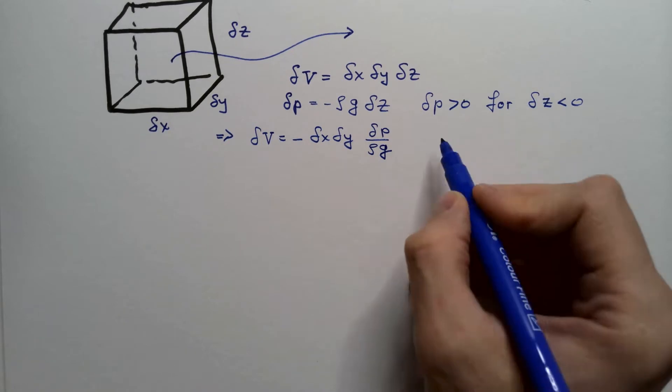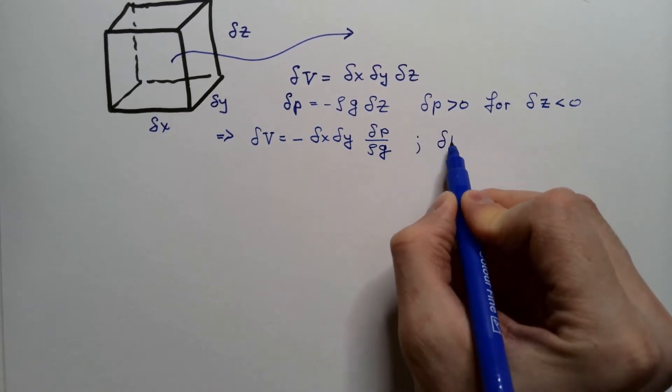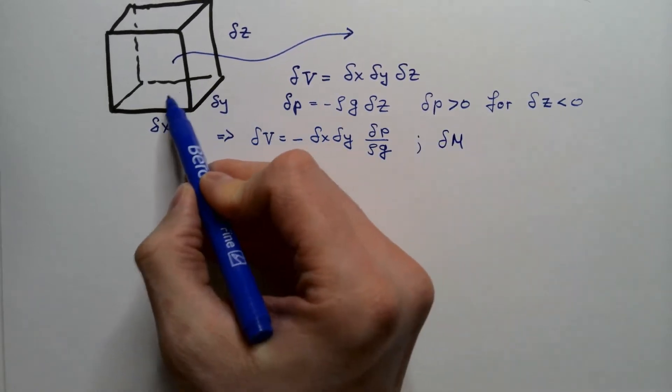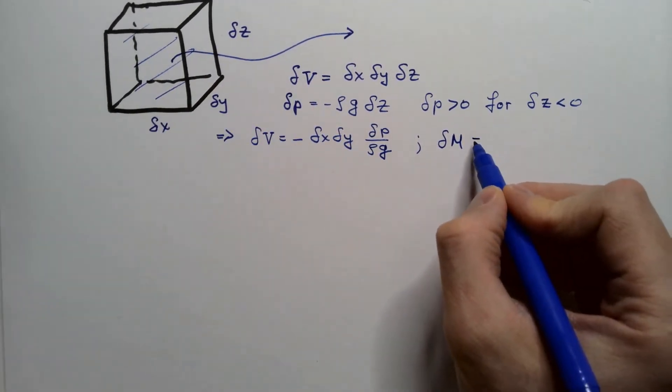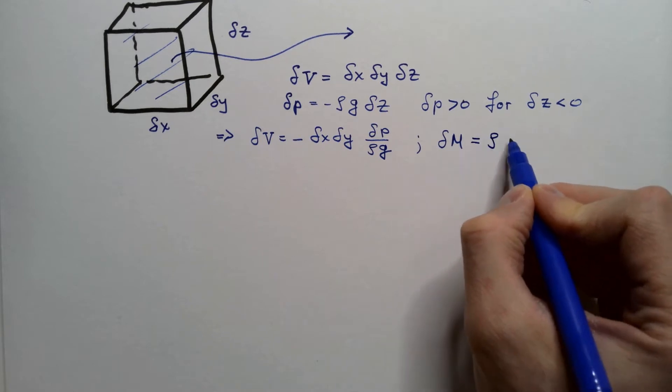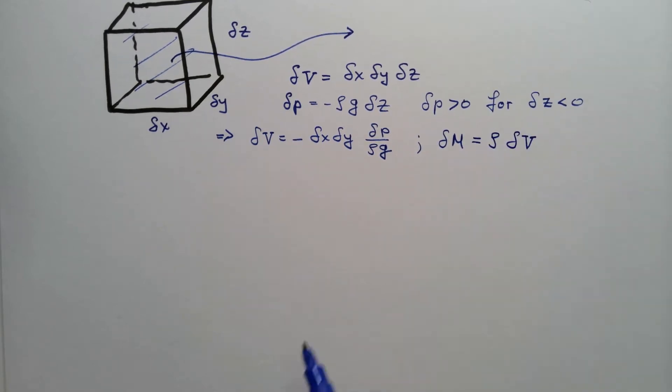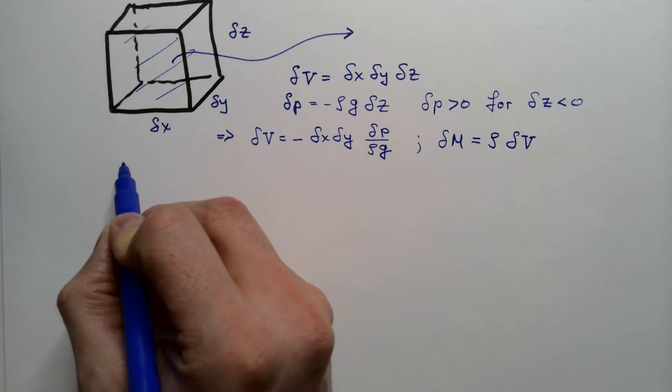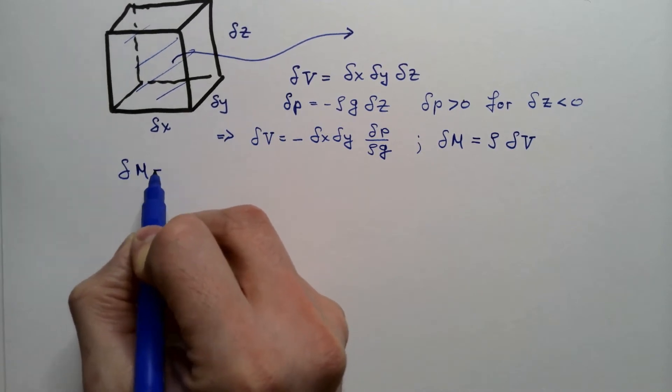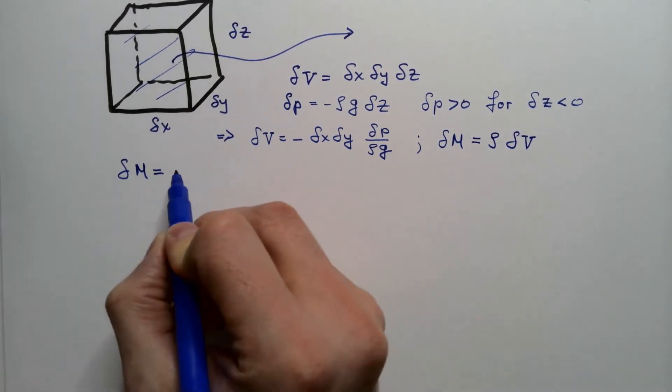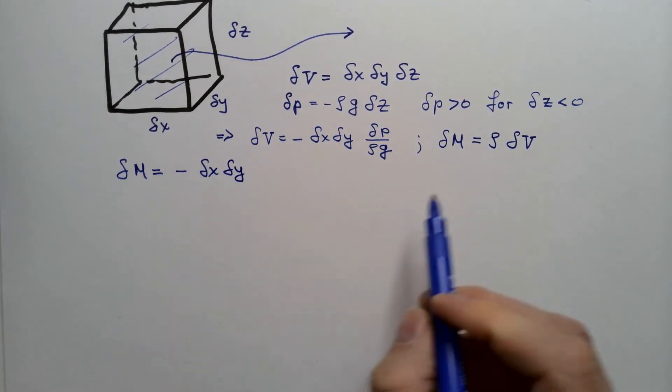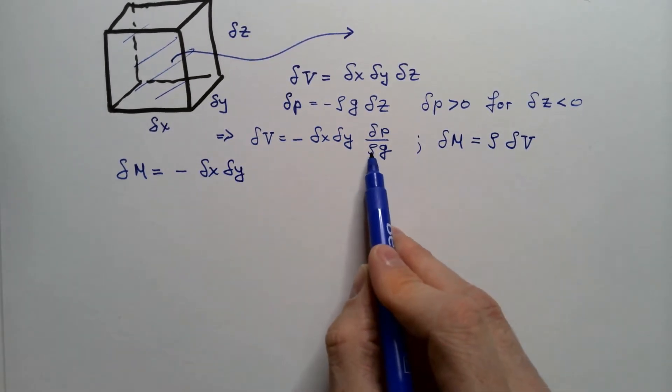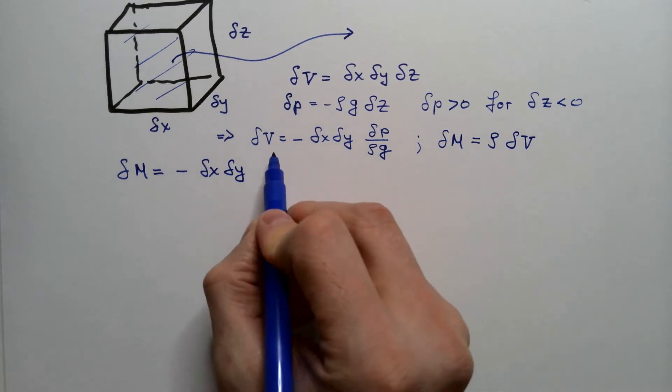Now further, delta m, which is mass of air in this cube, is equal rho delta V, which means delta m is equal negative delta x delta y, this rho will cancel with this rho, and I will get delta p over g.